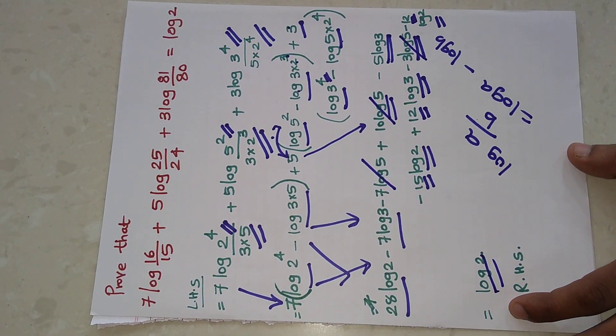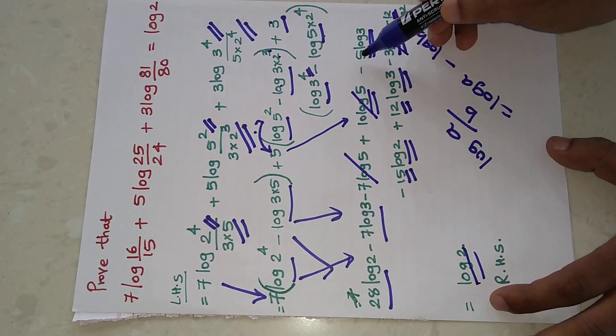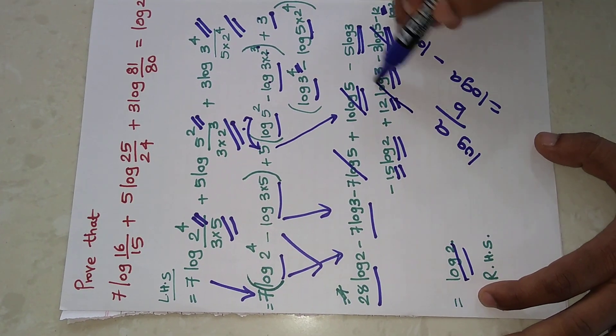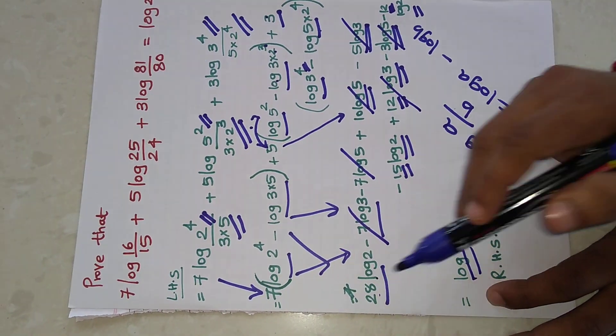After that, we will concentrate on log 3 terms. We have minus 7 log 3 minus 5, that is minus 12, and plus 12, so this will get cancelled out. Now we are left with 28 log 2...